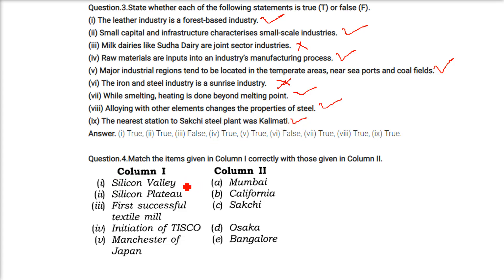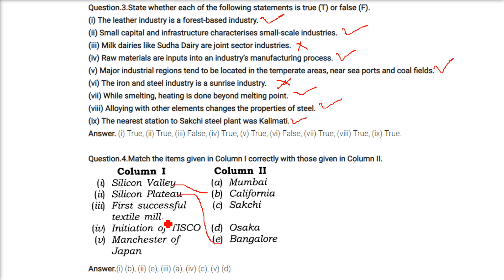Now let us match these: Silicon Valley with California; Silicon Plateau with Bengaluru; first successful textile mill with Sakchi by TISCO; and the Manchester of Japan is Osaka.